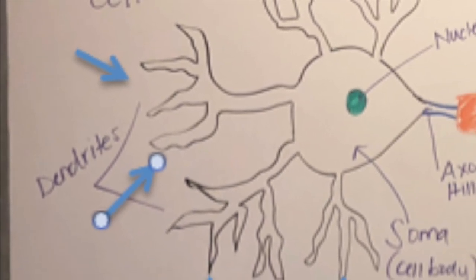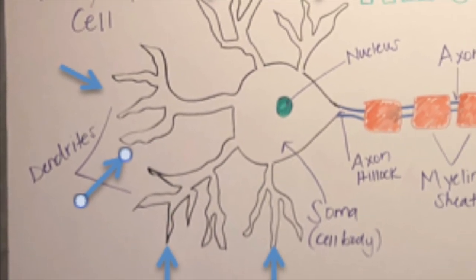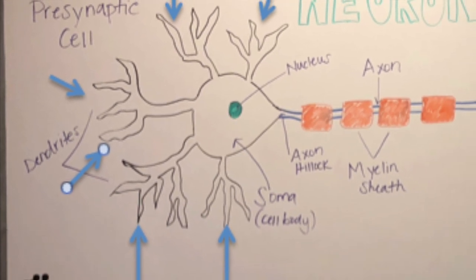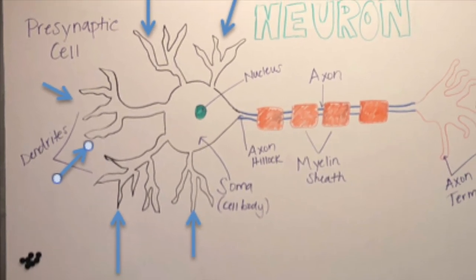Here we have the presynaptic neuron. The branchy extensions are called dendrites and they receive information via neurotransmitters from another neuron.